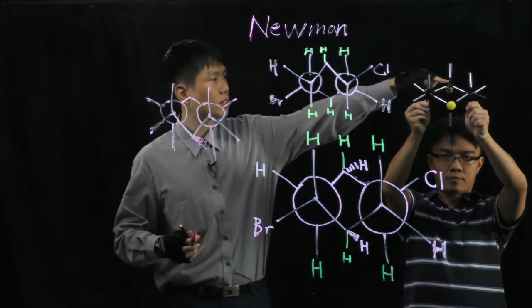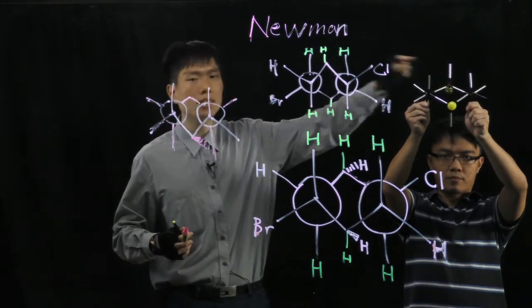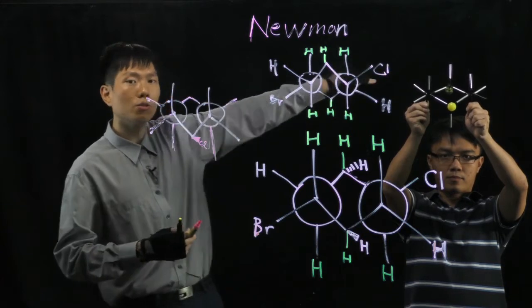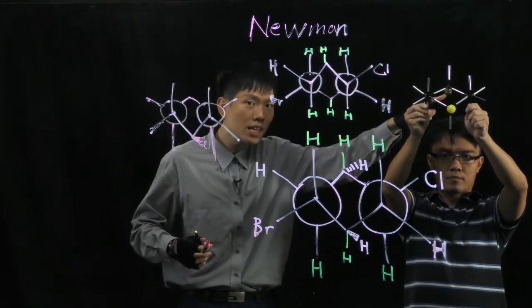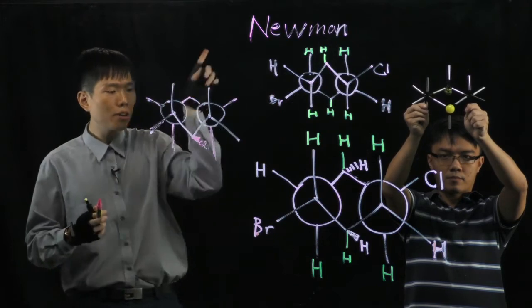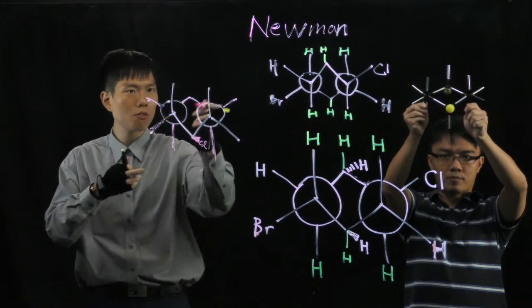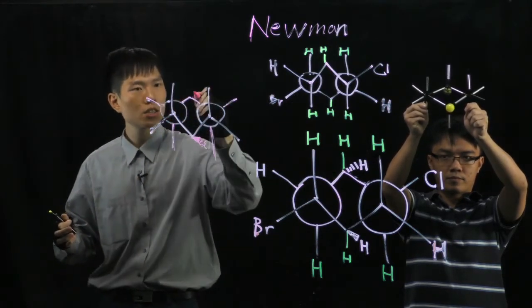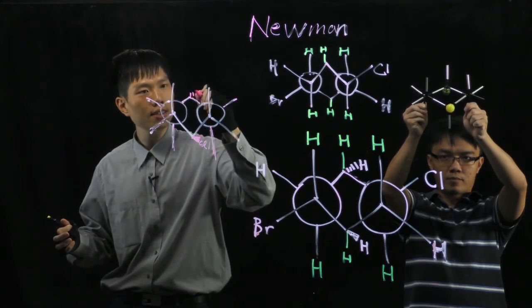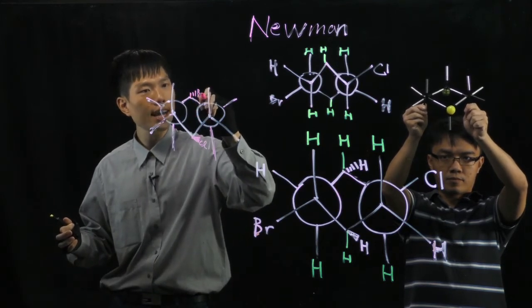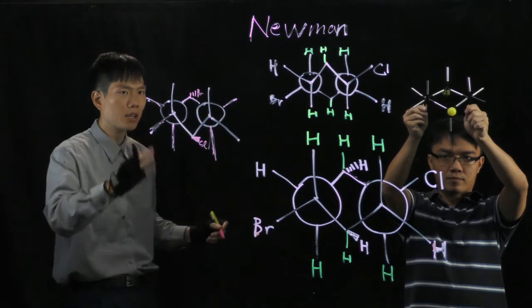Now the bromine. It's over here at the back carbon. It's pointing away, partially hidden. At this carbon it points back. The way we show it, we'll be using the hash lines. So hash lines, Br. And yet it's still in the equatorial position.